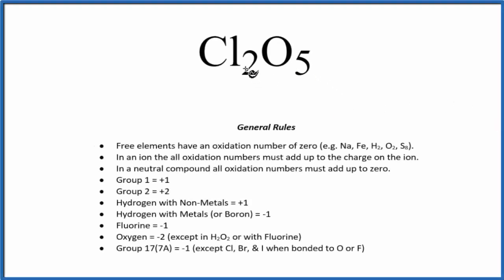To find the oxidation numbers for each of the elements in Cl2O5, we'll use these general rules here.